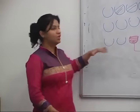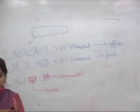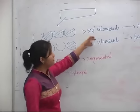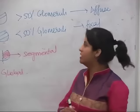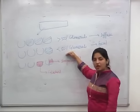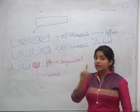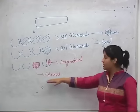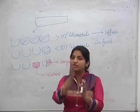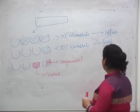One important basic concept about kidney biopsy: you have to see the involvement of glomeruli. If more than 50% of glomeruli in the kidney are involved, the disease is known as diffuse involvement. If less than 50% of the glomeruli are involved, it is called focal involvement. If you see a single glomerulus and it is completely involved, the involvement is known as global.